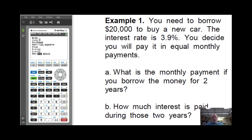And these are the numbers that we want to put in here. N is the number of compounding periods. So it's two years in months. So that's going to be 24. That's the number of compounding periods. That's N.